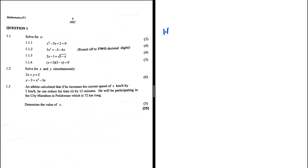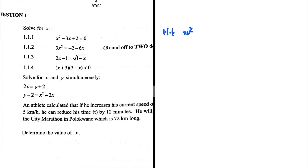Let's take a look at 1.1.1. We have x squared minus 3x plus 2 equals 0. We are supposed to solve for x. It should be easy to see that we can simply factorize here.